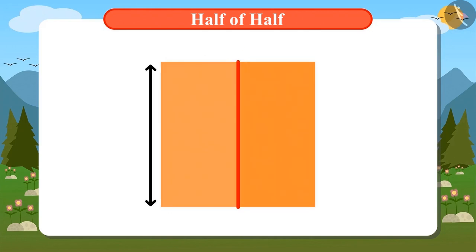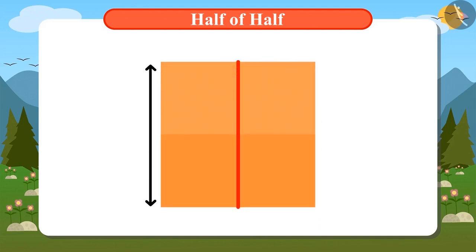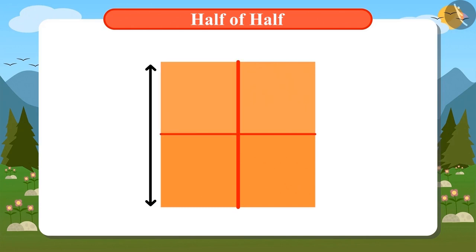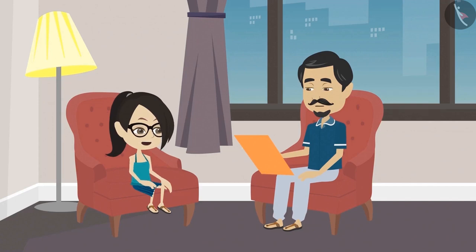But we can divide it from the long side too. Look, to divide it into half, we have to draw a line like this. Now, Vandana, tell me if this part is one-fourth or not. This is also half of half, so this is also a one-fourth part. That means this field can be divided into four equal parts in two ways.